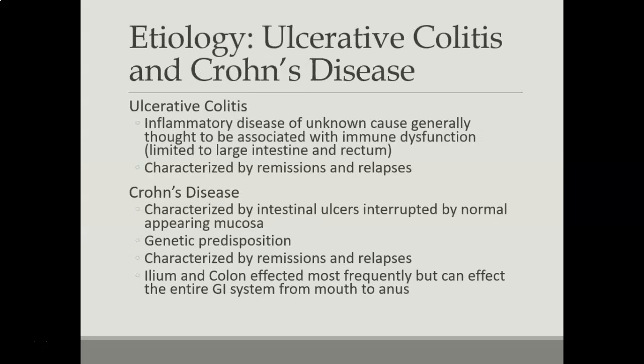Ulcerative colitis is an inflammatory disease of a really unknown cause — there could be some kind of immune dysfunction. Individuals can relapse and then go into remission. Crohn's disease has a bit more of a genetic predisposition, and it can also go into periods of remission and then relapse. The ileum and the colon are affected most frequently, but ulcerations can be seen from the oral cavity all the way to the anus — it can affect anywhere along the GI tract.